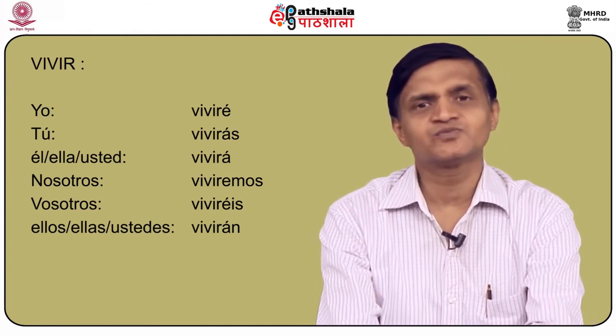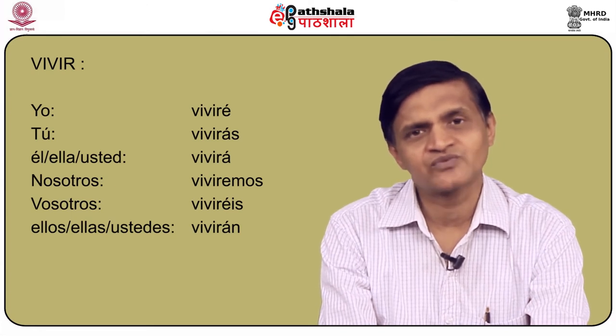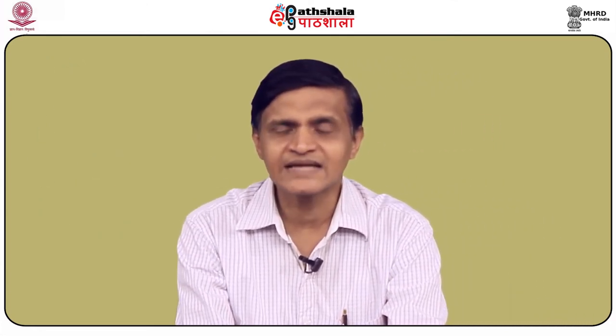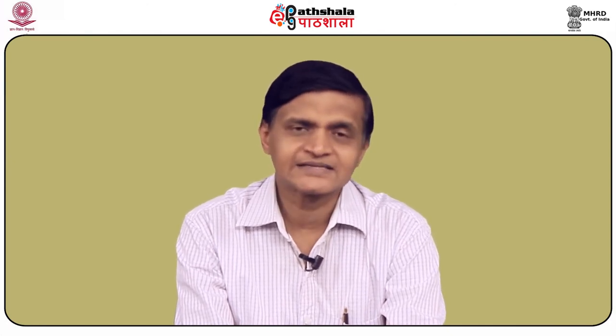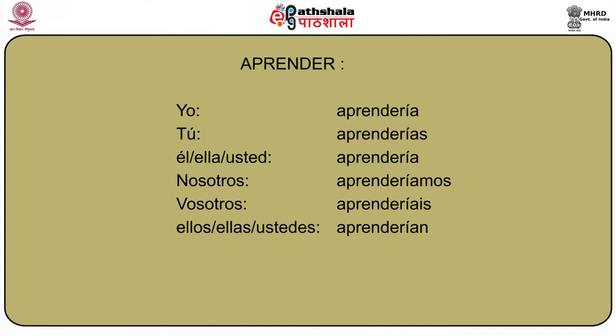Now that we have seen the future, let us move on to the next set of verbs — the conditional tense. As an example, let us take the first verb we already did in the future: aprender, to learn. How do you conjugate aprender in the conditional tense? Yo aprendería, tú aprenderías, él/ella/usted aprendería, nosotros aprenderíamos, vosotros aprenderíais, and ellos/ellas/ustedes aprenderían.